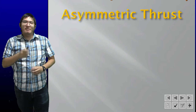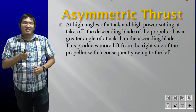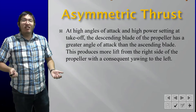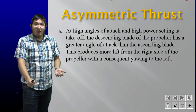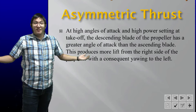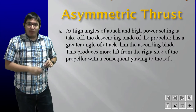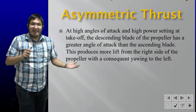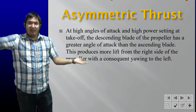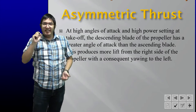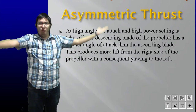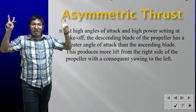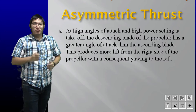This results in what we call asymmetric thrust. What asymmetric thrust is: at high angles of attack and high power settings — takeoff, for example — the descending blade of the propeller has a greater angle of attack than the ascending blade. Propellers are essentially little miniature wings that rotate and generate lift in the forward direction, so thrust.